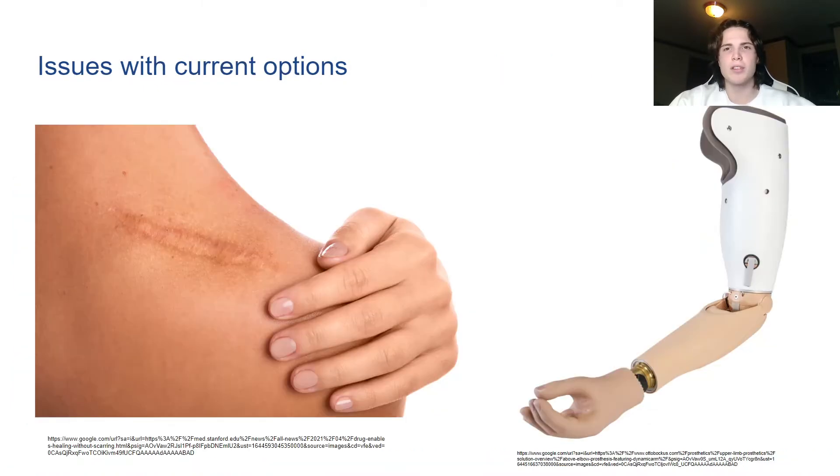Some of these options are very invasive and have a long recovery period and all of these options rely on the body's own reconstructive response. This means that there are no current solutions to large skeletal muscle injuries other than amputation and a prosthetic.